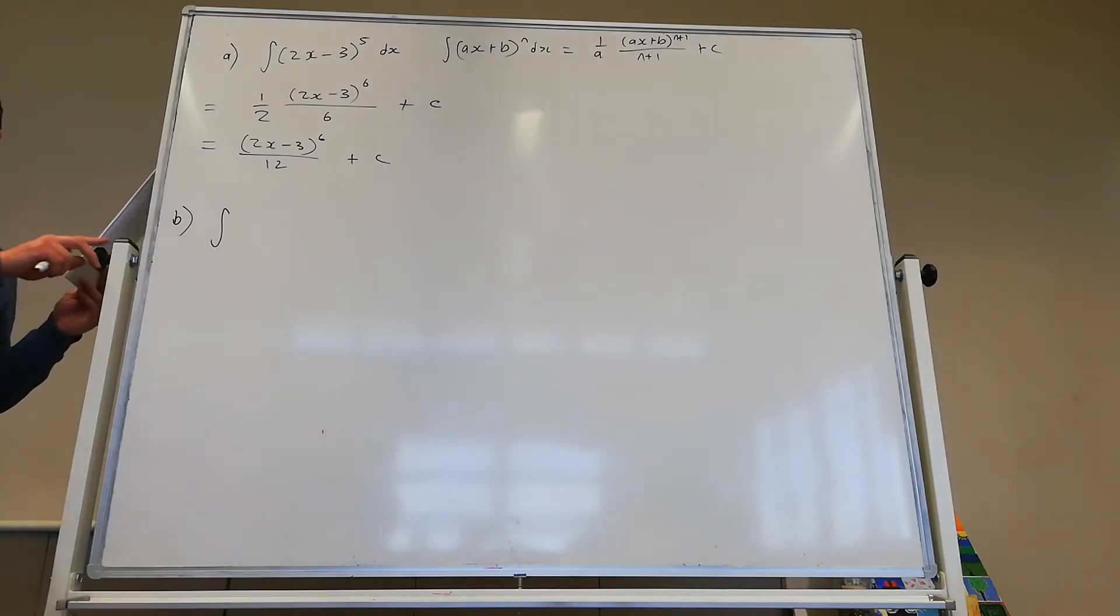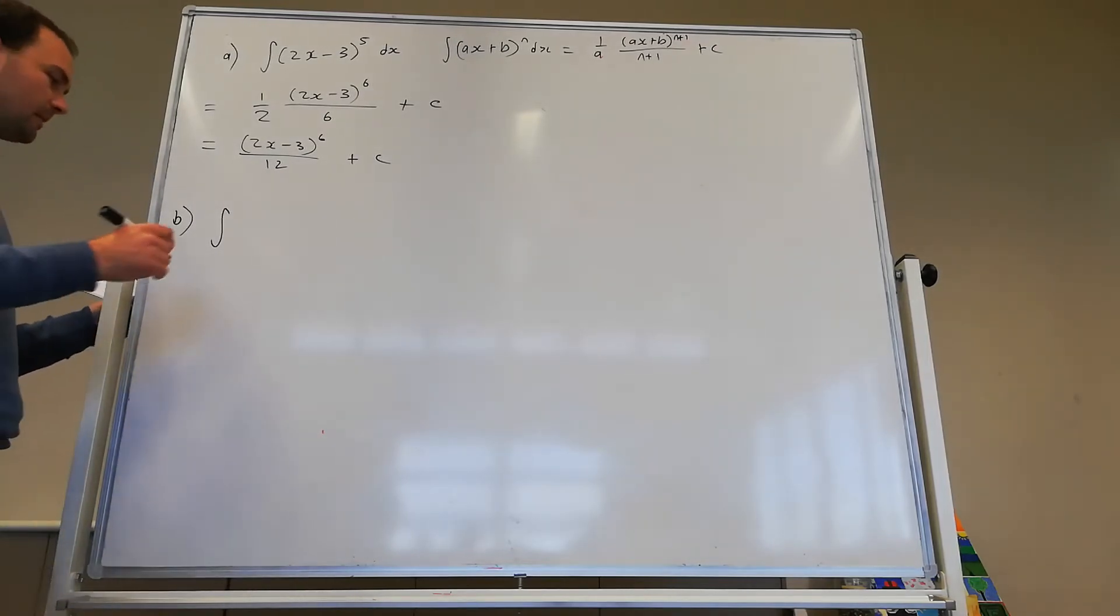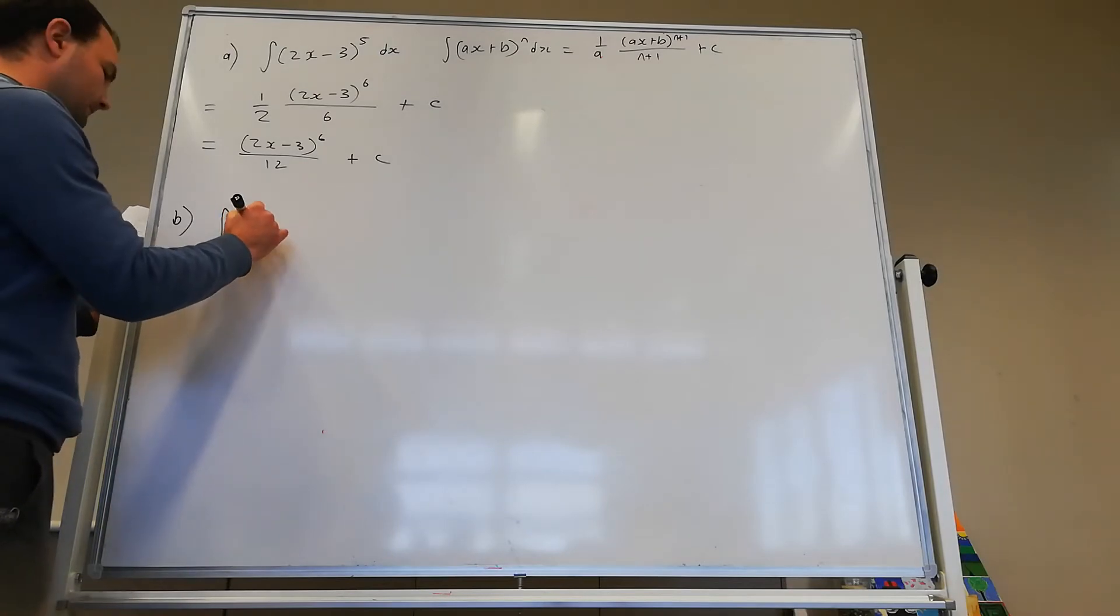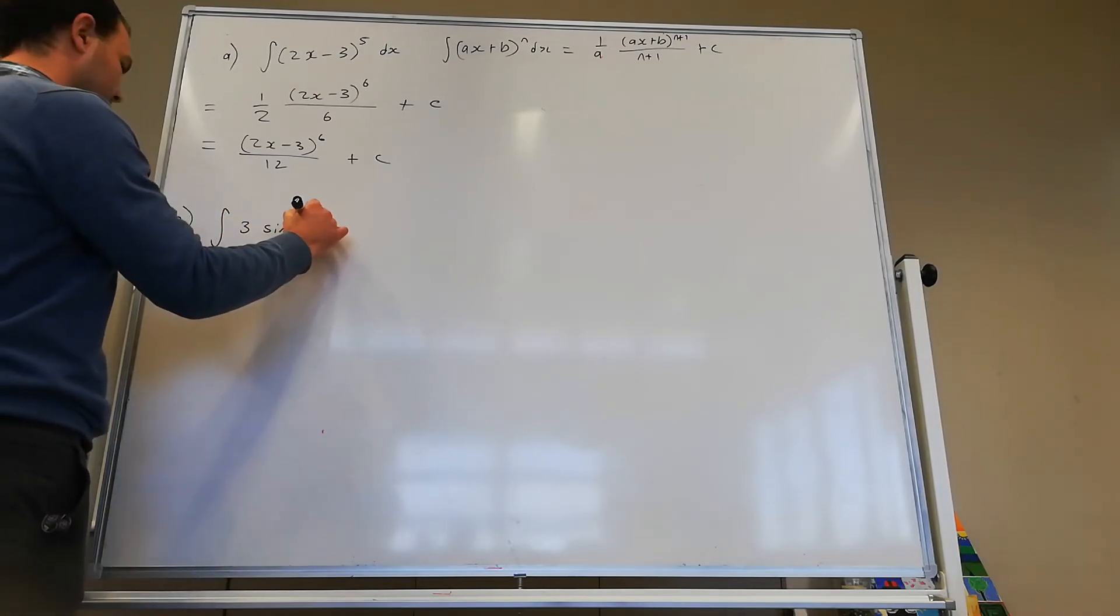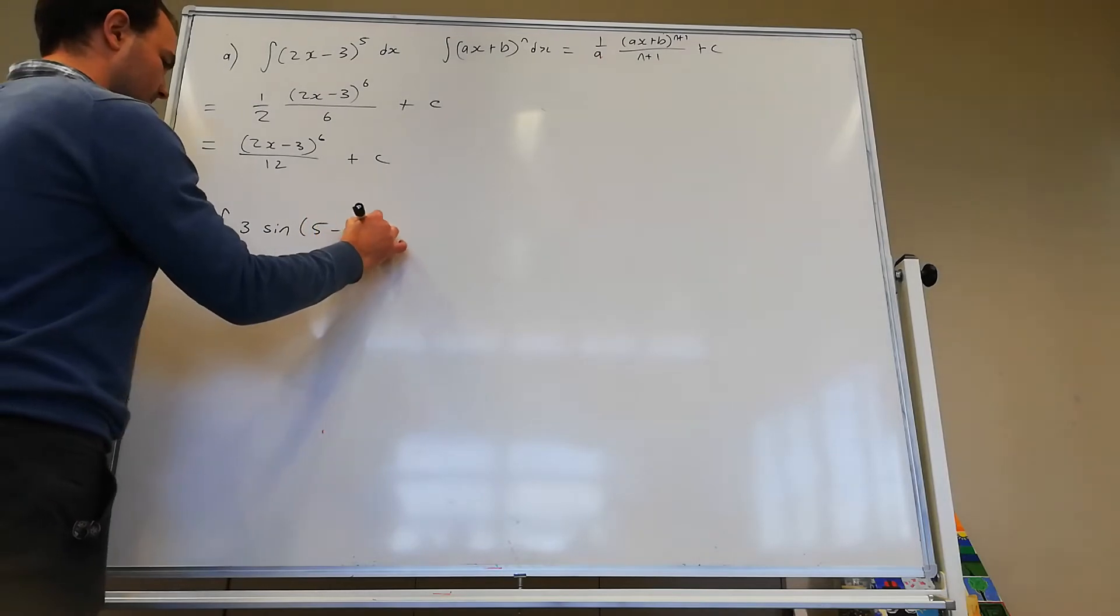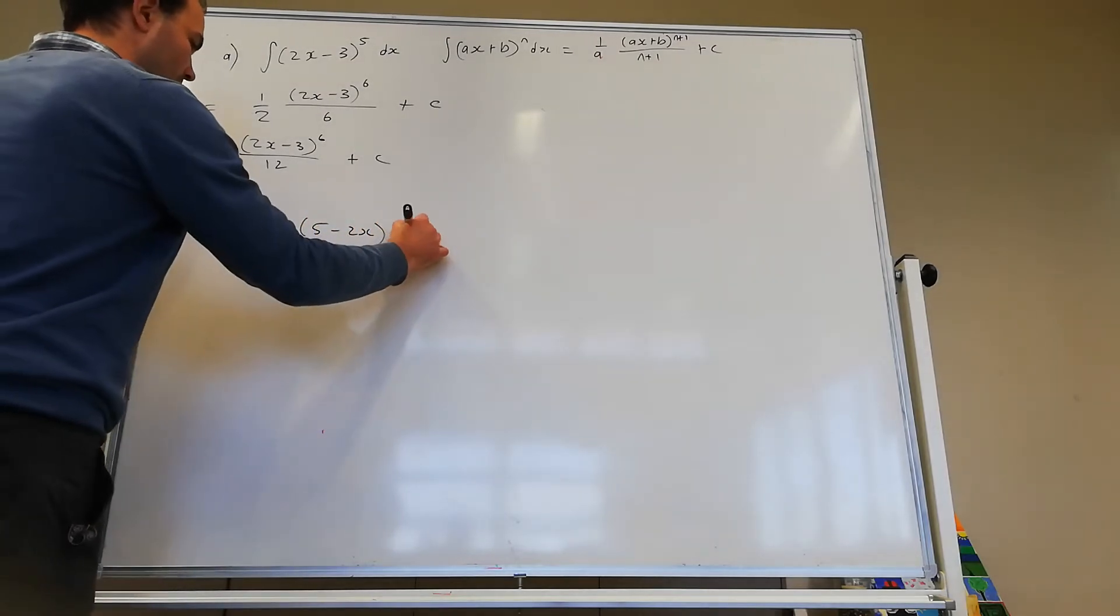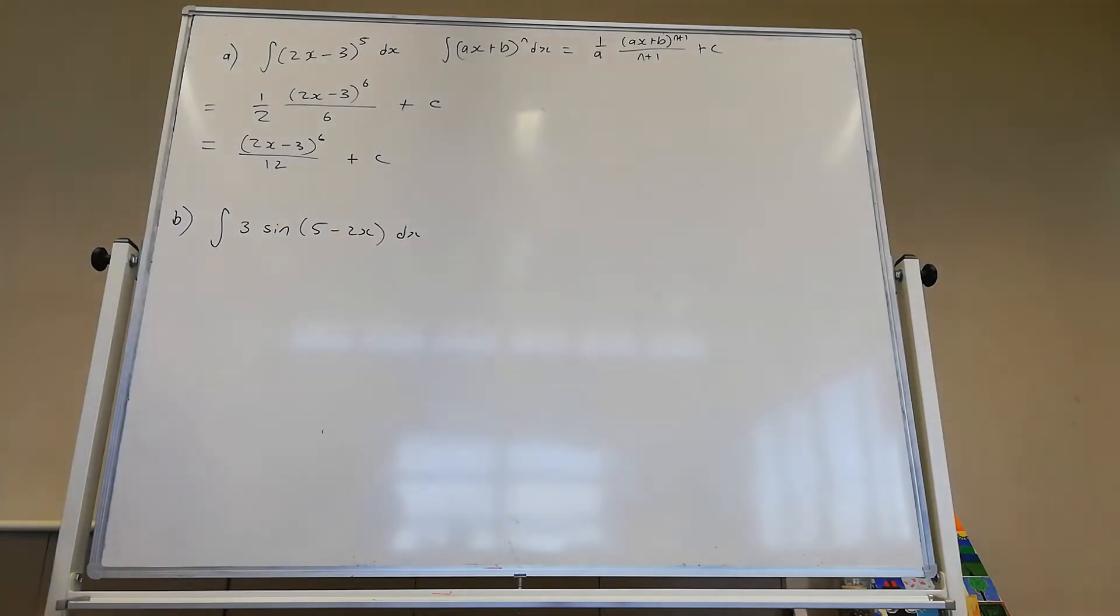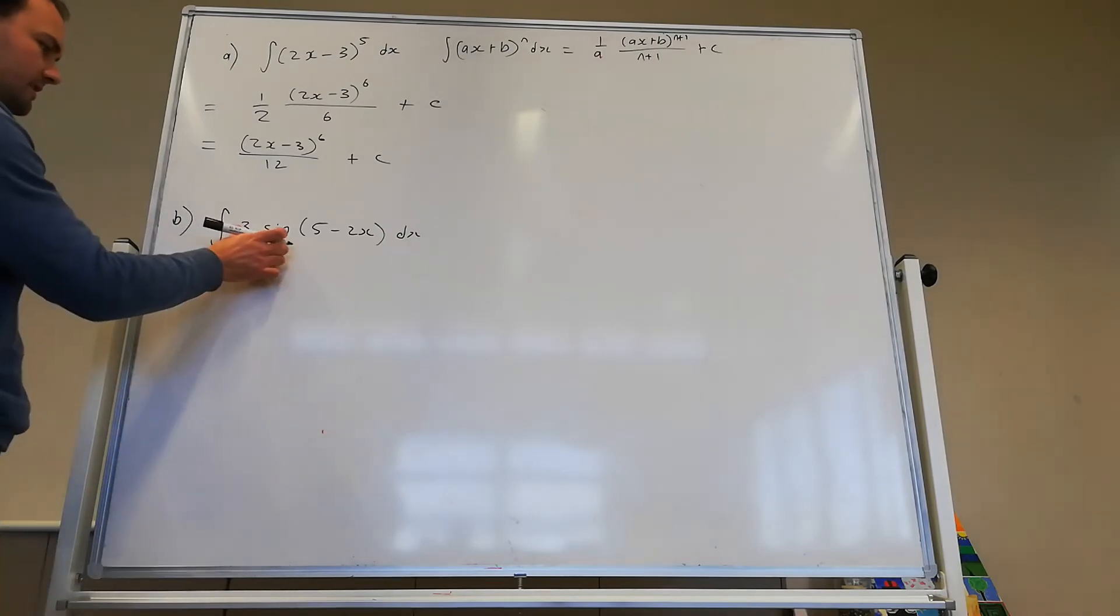Any questions about a there? Okay, so for b, we're finding the integral of 3 sin 5 take 2x. Now I think what might be helpful first is just to go, that 3, that can sit right out the front.